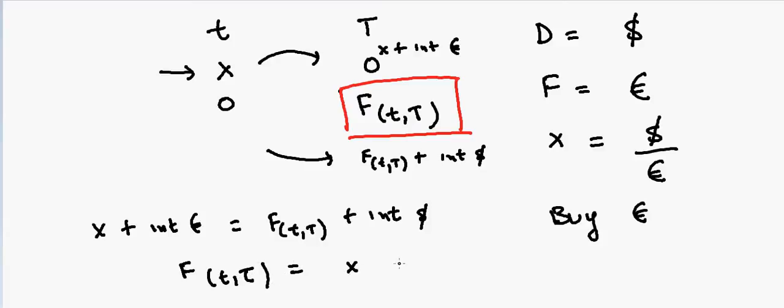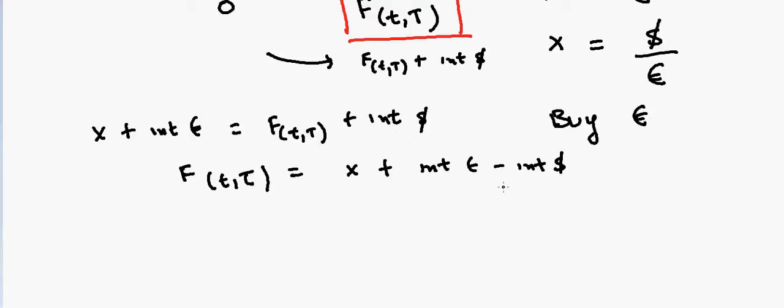to X plus interest in euros minus interest in dollars. So if we solve this equation, we can also write X times e raised to power minus interest in dollars, so it will be R